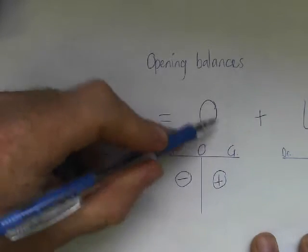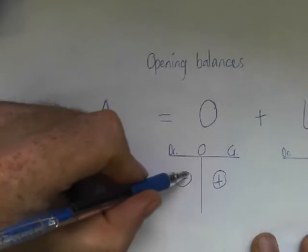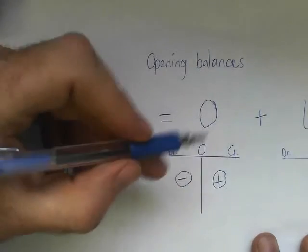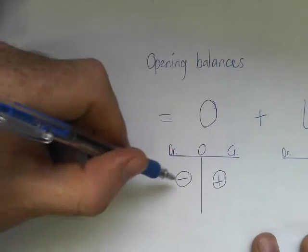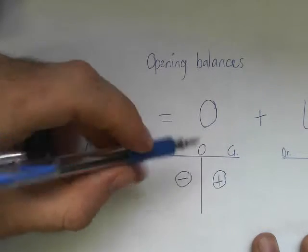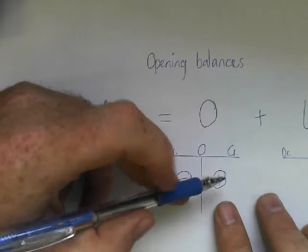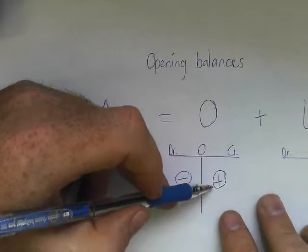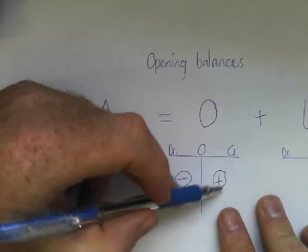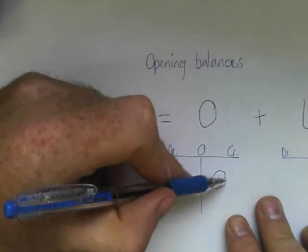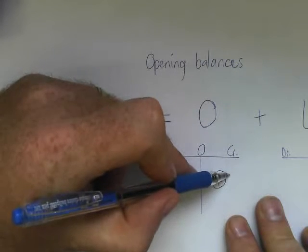Then we've got, in the middle, owner's equity. For owner's equity, the opening balance depends on whether we make the money of the business more or less. We can make the money of the business more by selling stuff, earning rent income, or putting money into the business as capital. For those accounts, the opening balance will be on the credit side.